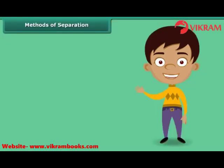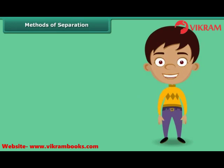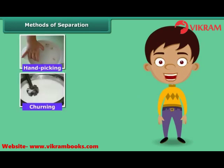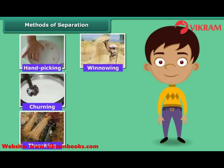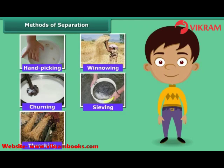You sure would have some idea about the methods of separation. In fact, you would have used some of these methods in your day-to-day life. Let us list some methods commonly used to separate the components of a mixture: hand-picking, churning, threshing, winnowing, and sieving. The basis for choosing a method of separation depends upon the physical properties of components.